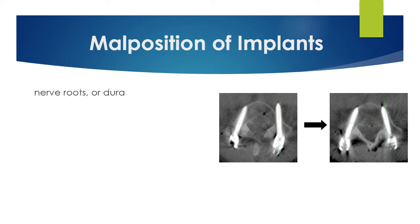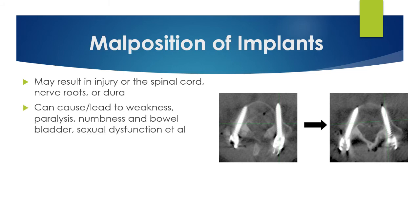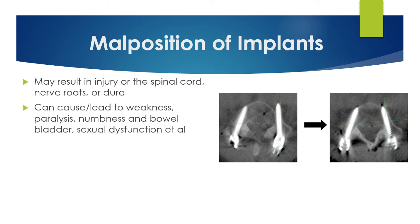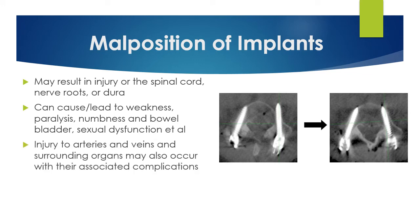Malpositioning of implants may result in injury to the spinal cord, nerve roots, or the dura, and can cause weakness, paralysis, numbness, bowel and bladder dysfunction, and sexual dysfunction. As seen in the picture, a malpositioned implant required correction so that the screw is now positioned entirely within the vertebra itself.